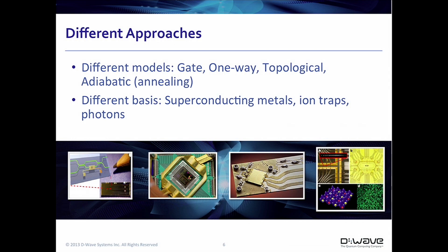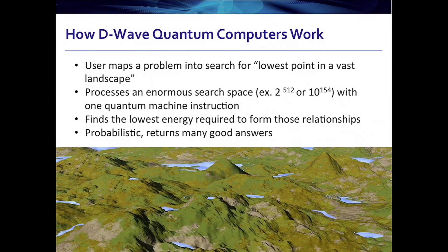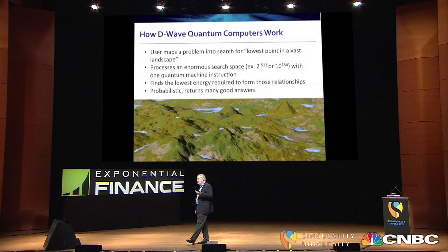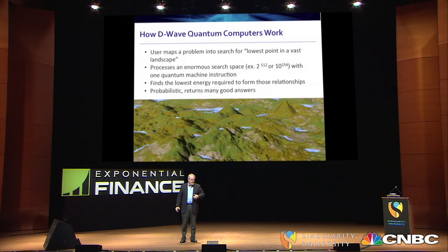There are other ways to do quantum computers. The Nobel Prize winner for physics last year, Dave Wineland, uses ions and manipulates them with lasers — great science, and I'm sure they'll eventually build a quantum computer out of that also. One way you could describe how our computer works is to think about a landscape where the challenge is to find the lowest point or valley in that landscape — how you would traverse it as a hiker to find that lowest point.